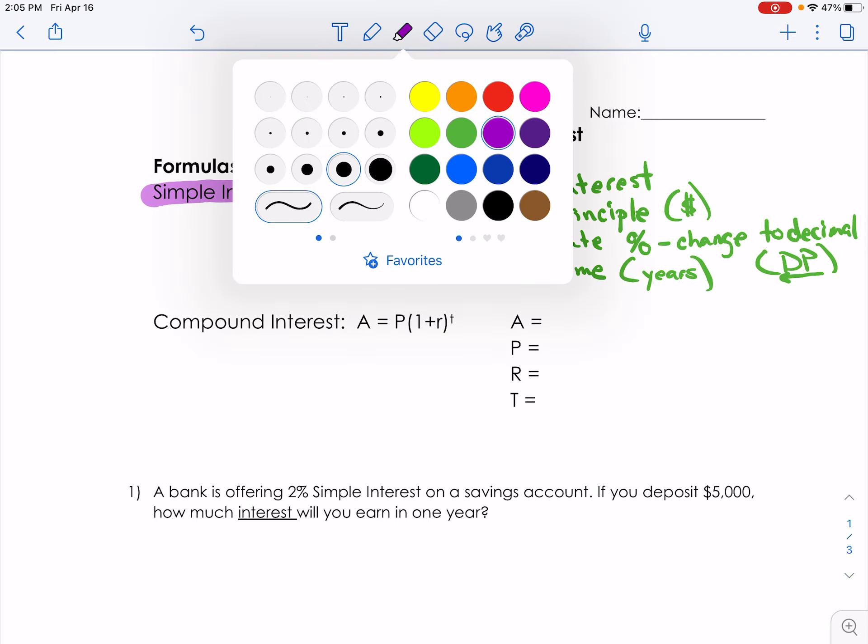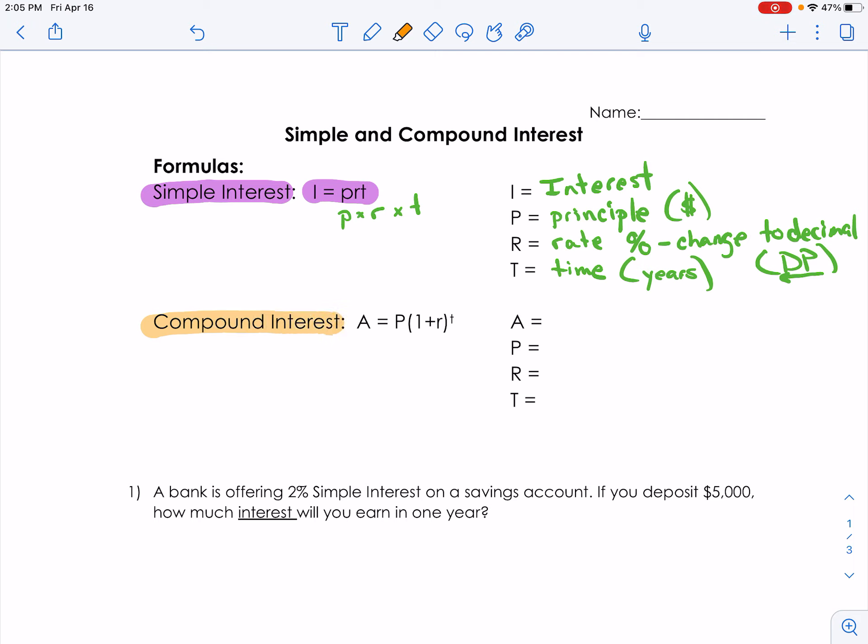Our second kind of interest that we're going to talk about is compound interest. So compound interest, our formula is A equals P parentheses 1 plus R, close the parentheses, and then that's to the power of T. So that's an exponent.